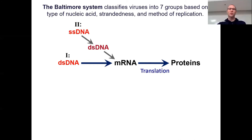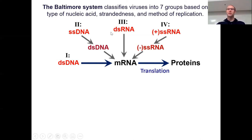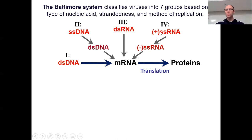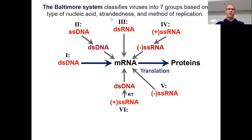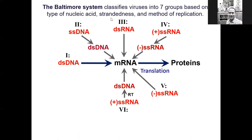Some viruses are single-stranded DNA, and that actually gets converted to double-stranded DNA first, before it gets converted into messenger RNA. There are double-stranded RNA viruses that skip the DNA step entirely. There are single-stranded RNA viruses, and there's two types - one kind of looks like the sense strand, and one kind of looks like the anti-sense strand, so we use plus and negative when we talk about viruses.